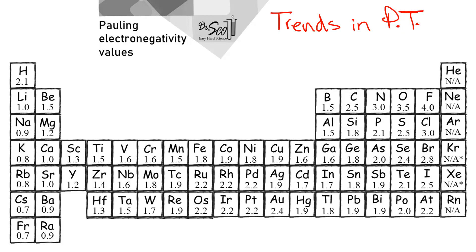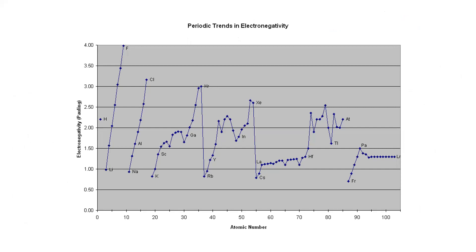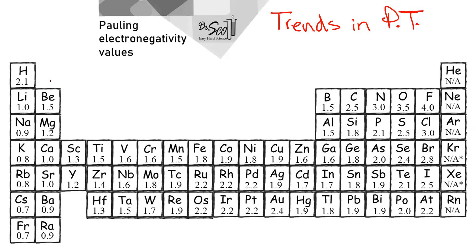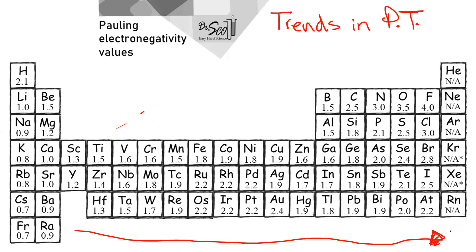These trends are related in some ways to electron affinity as well as ionization energy. The trends tend to follow either left-to-right and top-to-bottom increasing, or opposite directions, and they make sense. For example, the size of the atom goes opposite to electronegativity — going from left to right and top to bottom, you actually decrease the size of the atom. This makes sense because an atom's tendency to pull electrons more closely to itself means the whole particle condenses in on itself.